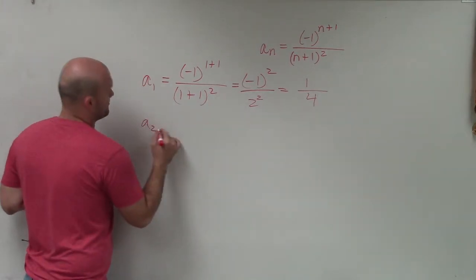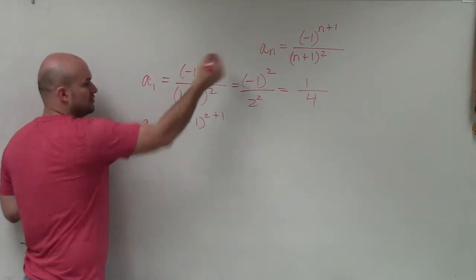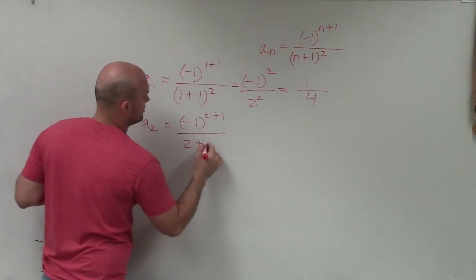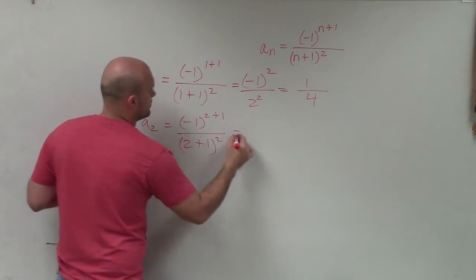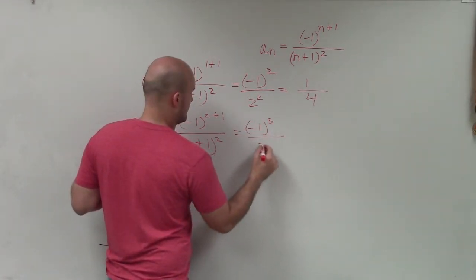So now let's go to 2. So I have negative 1, 2 plus 1. Now I'll plug in the 2 in for the n over 2 plus 1 squared. That equals negative 1 raised to a third over 3 squared.